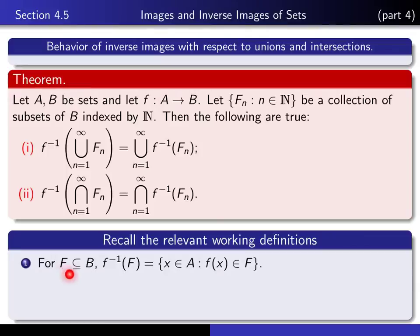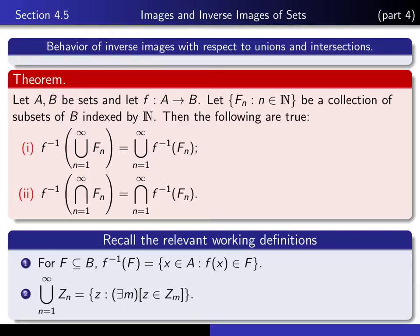If F is a subset of the codomain B, then f-inverse of F is the set of all x in the domain such that f(x) maps into the set F. The working definition of the denumerable union uses a generic letter, because on the left side you're taking a union of subsets of B, whereas on the right side you're taking a union of subsets of A. We're going to apply it to both sides.